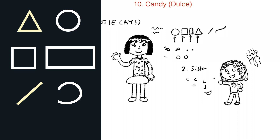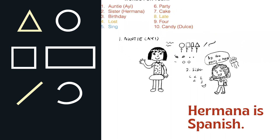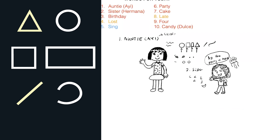She might be saying, 'Auntie, party's over here!' Do you know which language 'Hermana' is from? Spanish — yes! So 'ii' is in Chinese and 'Hermana' is in Spanish. Awesome. We've got to move a little faster now.